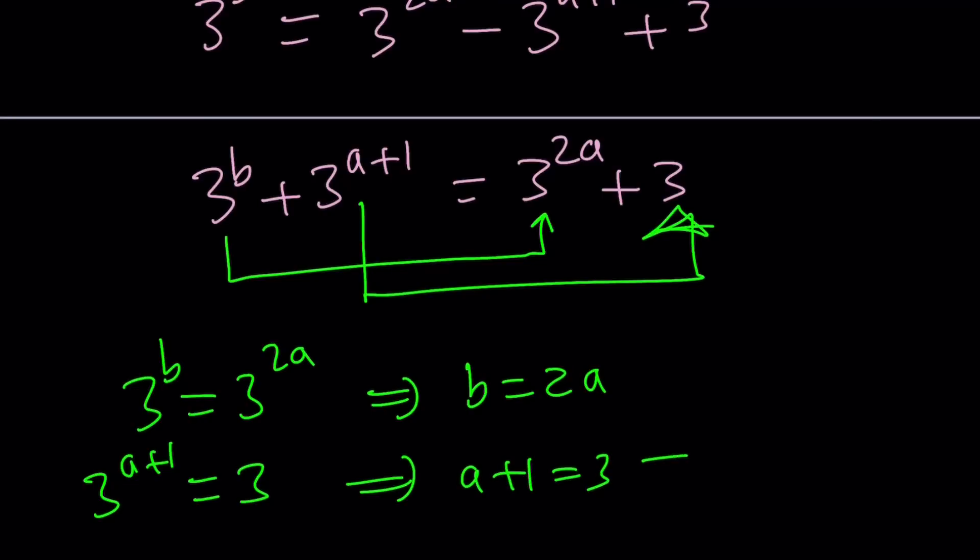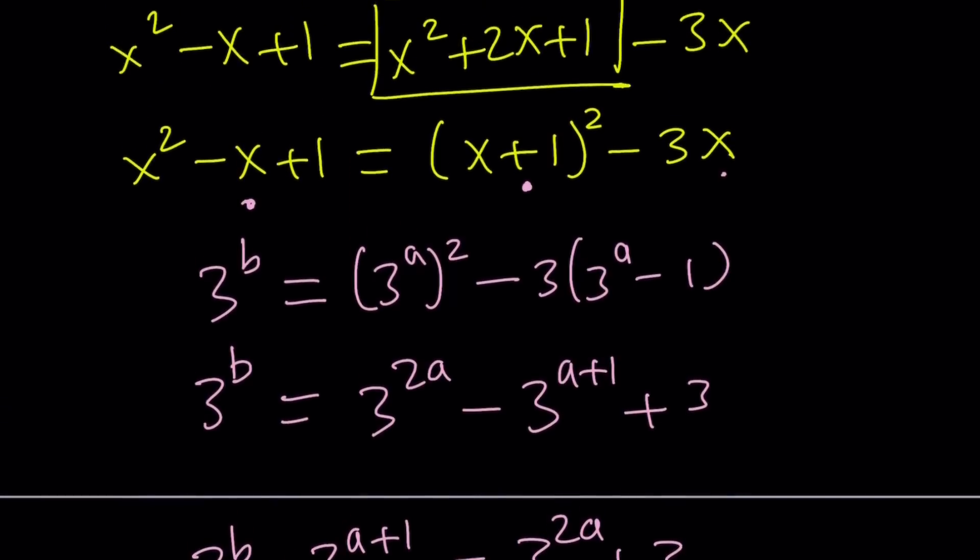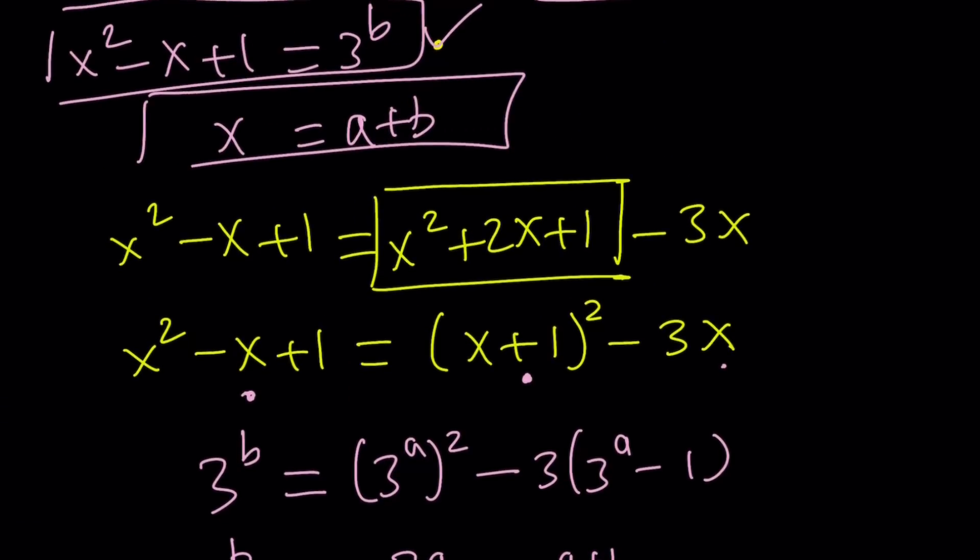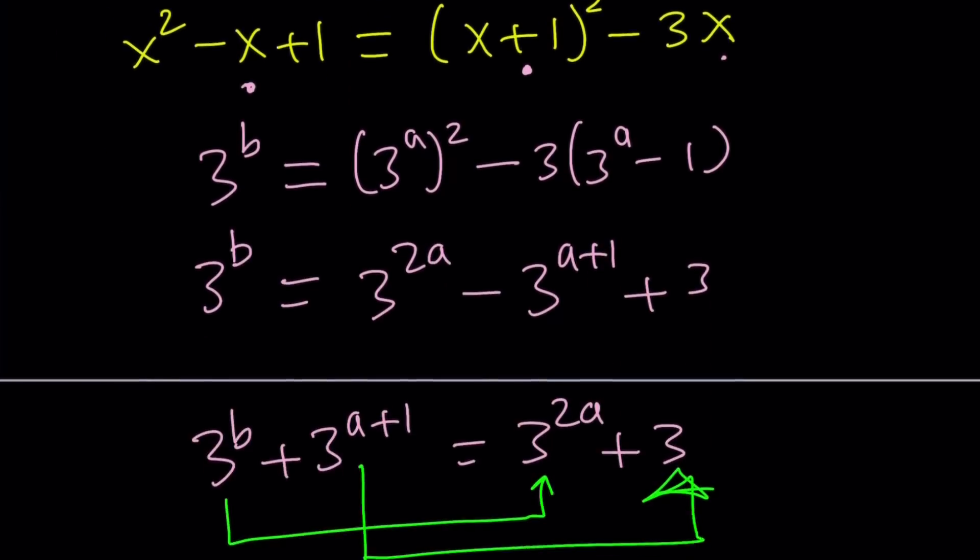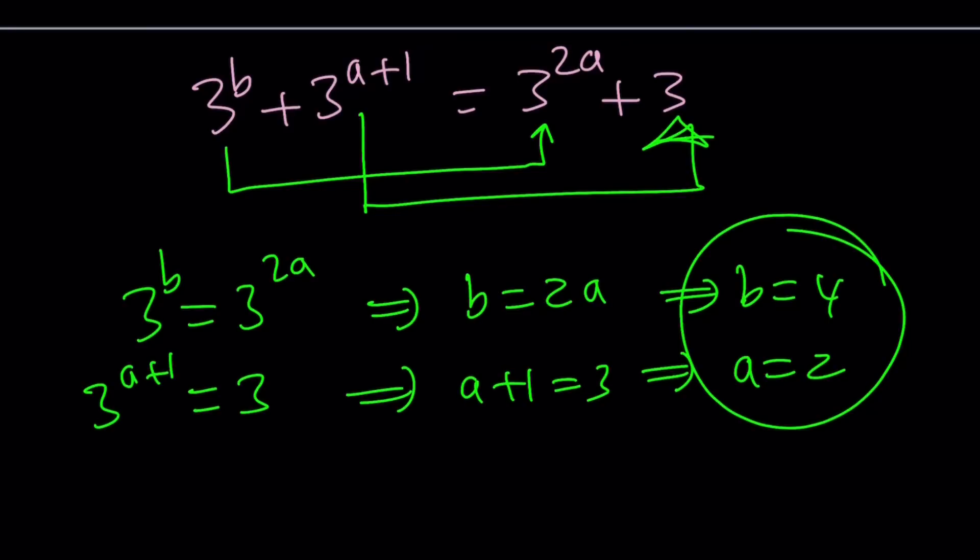First, I'm going to write it down and then solve it. This one gives us a equals 2, and this one gives us b equals 2a, which is 4. Wait, am I messed up here? Sorry about that. a plus 1 does not equal 3. It's equal to 1 because 3 is 3 to the first power. So, from here, a should be 0. Correction. And since a is 0, b is also 0. Wow. I messed up big time. Apologies. I'm not going to cut this part, so you can see that I make mistakes.